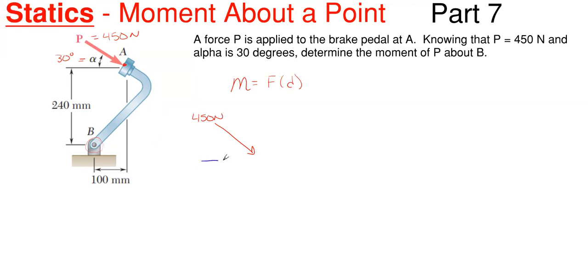So that would be our X force direction here, so this would be 30 degrees, and then our Y would be in the vertical direction here. So since the 450 is going down and to the right, my forces in the X and Y will be going down and to the right acting here at point A.